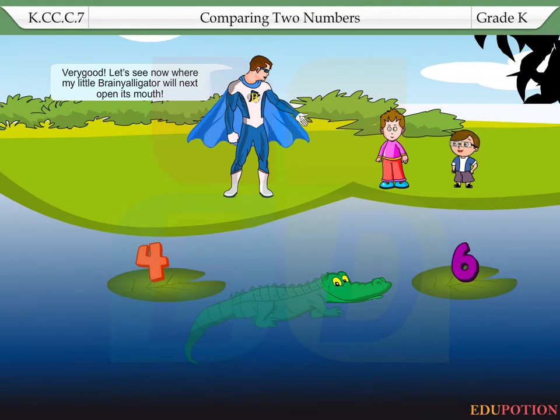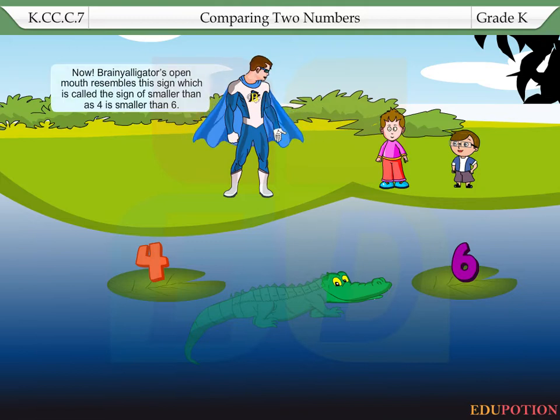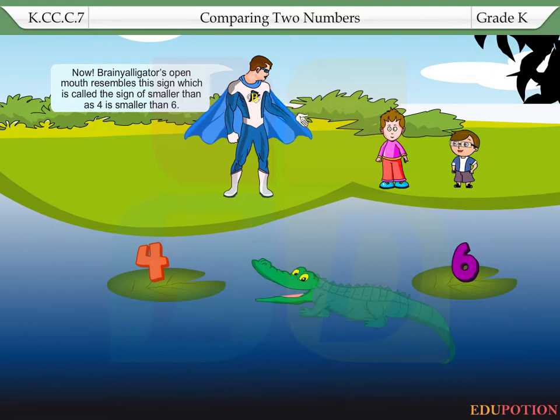Let's see now where my little brainy alligator will next open its mouth. Now, Brainy Alligator's open mouth resembles this sign, which is called the sign of smaller than, as four is smaller than six.